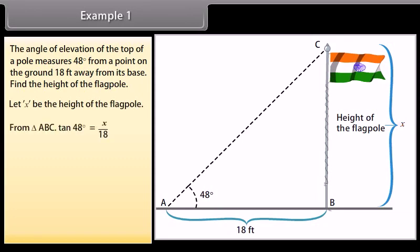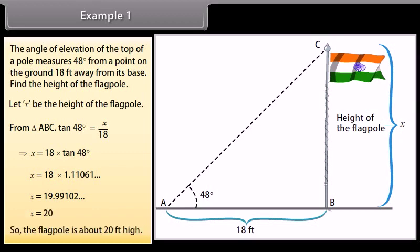From triangle ABC, tan 48 degrees equals x upon 18, which implies that x equals 18 into tan 48 degrees, which equals 18 into 1.11061, which equals 19.99102, which equals 20. So, the flagpole is about 20 feet high.